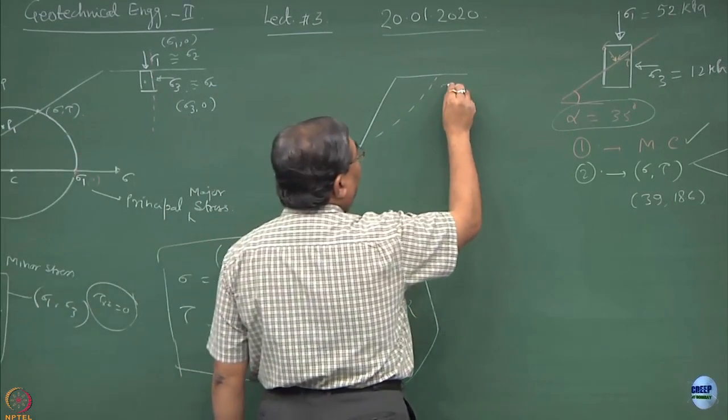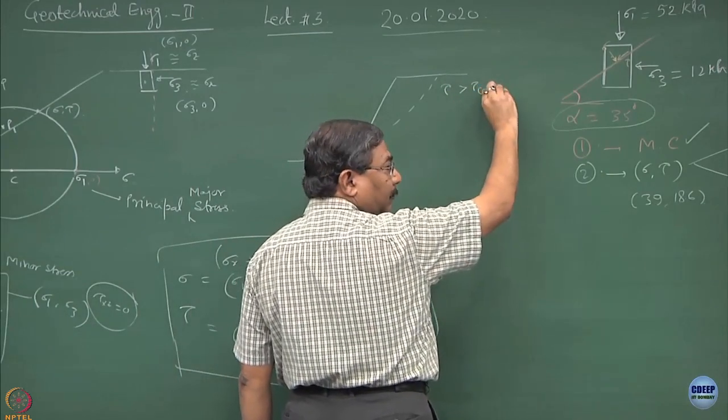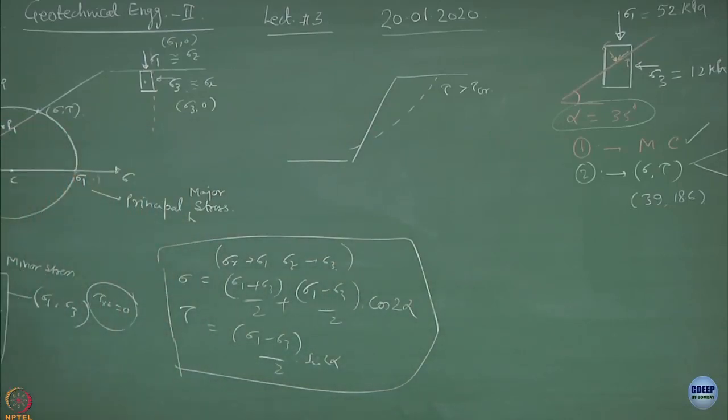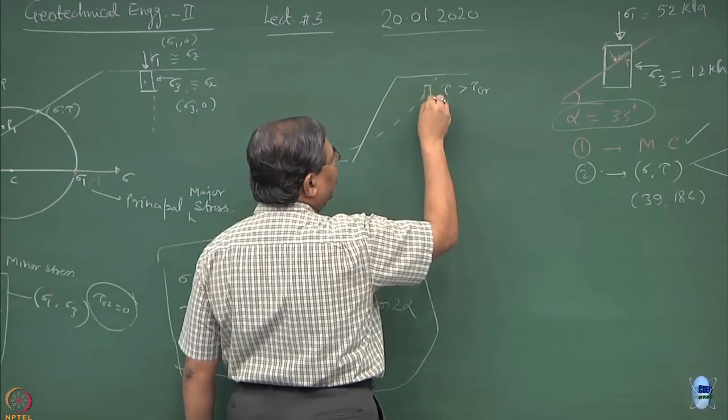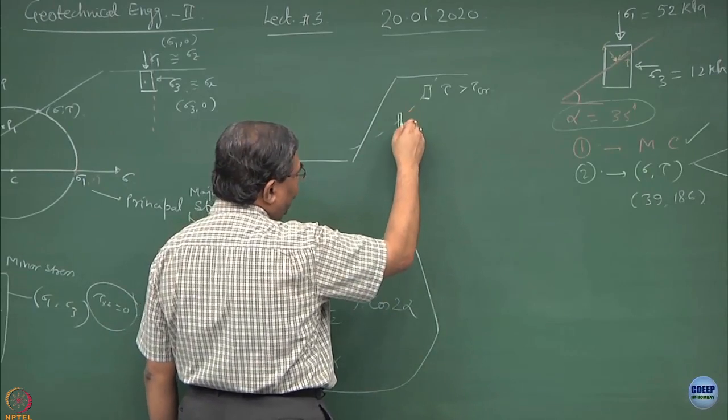At this plane, tau is getting or becoming higher than tau critical. So the failure has to happen. At this point, the element looks like this. At this time, this point, the element looks like this.